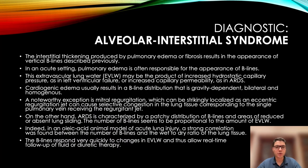The last lung ultrasound diagnosis we will discuss is the alveolar interstitial syndrome. The interstitial thickening produced by pulmonary edema or fibrosis results in the appearance of vertical B-lines as described previously. In an acute setting, pulmonary edema is often responsible for the appearance of B-lines. This extravascular lung water may be the product of increased hydrostatic capillary pressure as in left ventricular failure, or increased capillary permeability as in ARDS. Cardiogenic edema usually results in a B-line distribution that is gravity-dependent, bilateral, and homogeneous. A noteworthy exception is mitral regurgitation, which can be strikingly localized, as an eccentric regurgitation jet can cause selective congestion of lung tissue corresponding to a single pulmonary vein receiving the regurgitant jet.